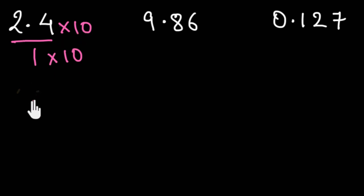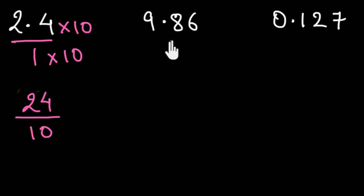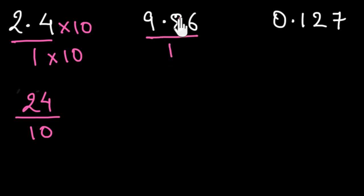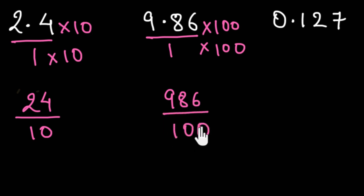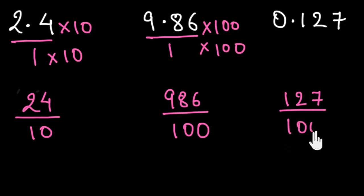2.4 times 10 is equal to 24, and in the denominator we would have 10. Similarly, if we would like to convert 9.86 into its rational form, we can write this as 9.86 divided by 1. On multiplying both numerator and denominator by 100, since we have two digits after the decimal, this would be written as 986 divided by 100. Similarly, for 0.127, we can write this as 127 divided by 1000.